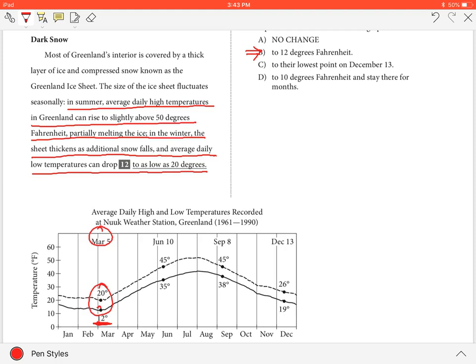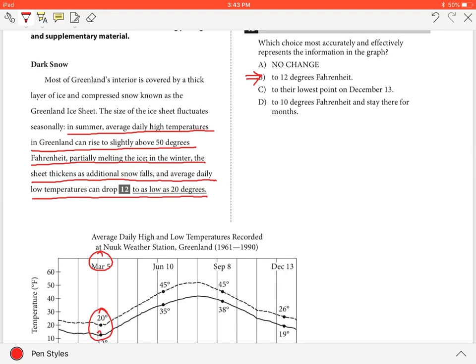But the chart shows that in January, February, and March, the temperature frequently falls below that point. Choices C and D are incorrect because the information each provides is inconsistent with the information on the chart.